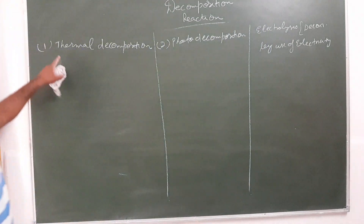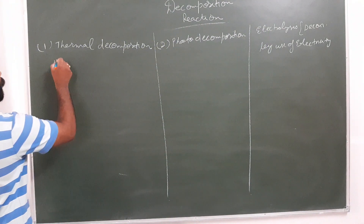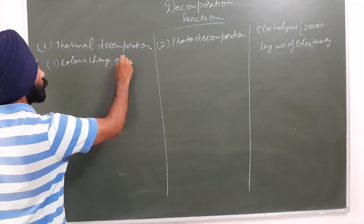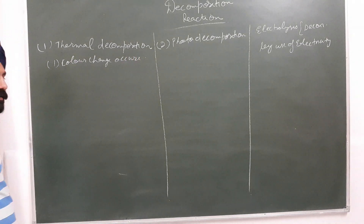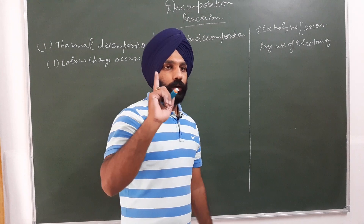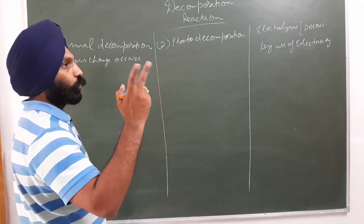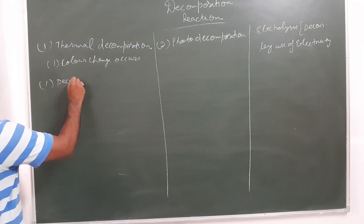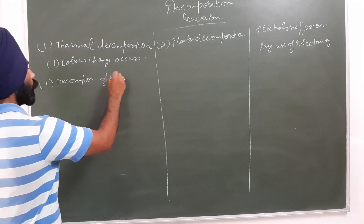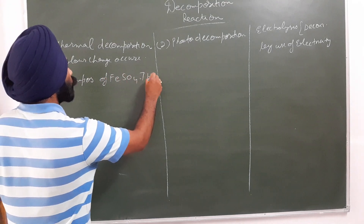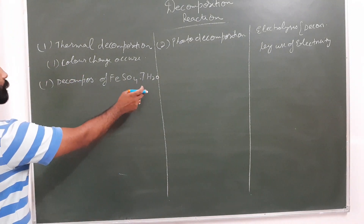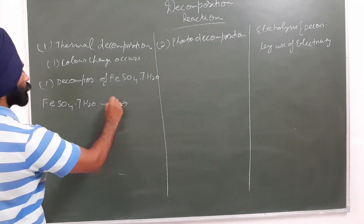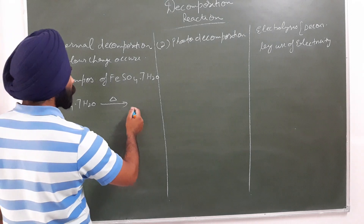The main thing about decomposition reaction is that the reactant is only one and the products are more than one, because one compound breaks down into two or more simpler compounds. Now we will discuss thermal decomposition. In thermal decomposition, a color change occurs. The first example from your NCERT is the decomposition of FeSO4·7H2O, ferrous sulfate.